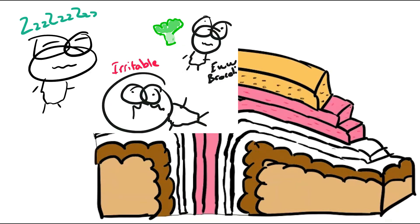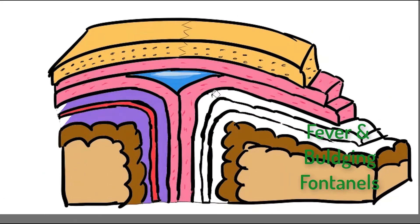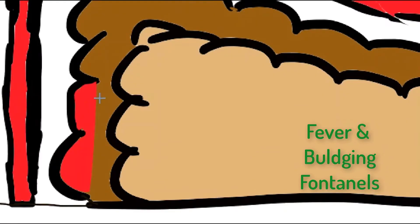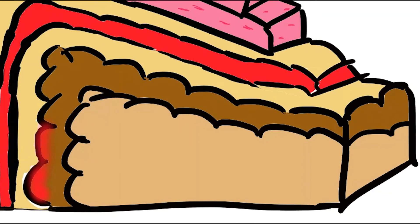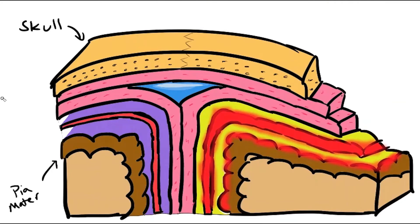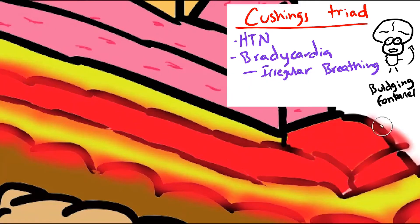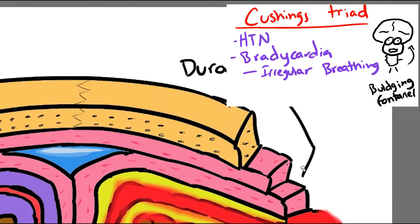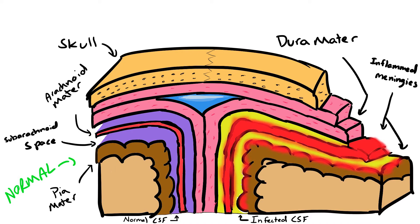For infants, they usually present with lethargy, poor feeding, irritability, and maybe vomiting — all very vague symptoms. They will usually have a fever on physical exam, and you may see bulging fontanelles or focal neural deficits like a cranial nerve 3 or cranial nerve 6 palsy, or even hypertension with bradycardia. This hypertension with bradycardia is known as Cushing's reflex, seen in patients with increased intracranial pressure, and is part of Cushing's triad: hypertension, bradycardia, and irregular breathing. We usually don't see this sign in neonates because expanding fontanelles help prevent increased ICP.